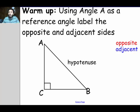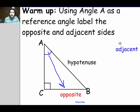The warm up says using angle A as a reference angle, label the opposite and adjacent sides. So by now you should know that in a right triangle, the hypotenuse is the longest side. If we're going to use angle A as our reference angle, the opposite side must be across from the reference angle. So the opposite side is side BC.